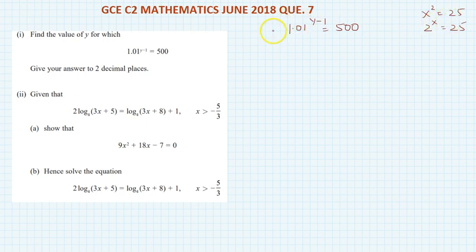So in this I've taken log of both sides: log 1.01 to the power y minus 1 is equal to log 500. Now the power will come here because log a to the power m is equal to m log a. This power will come here, so y minus 1 log 1.01 is equal to log 500.